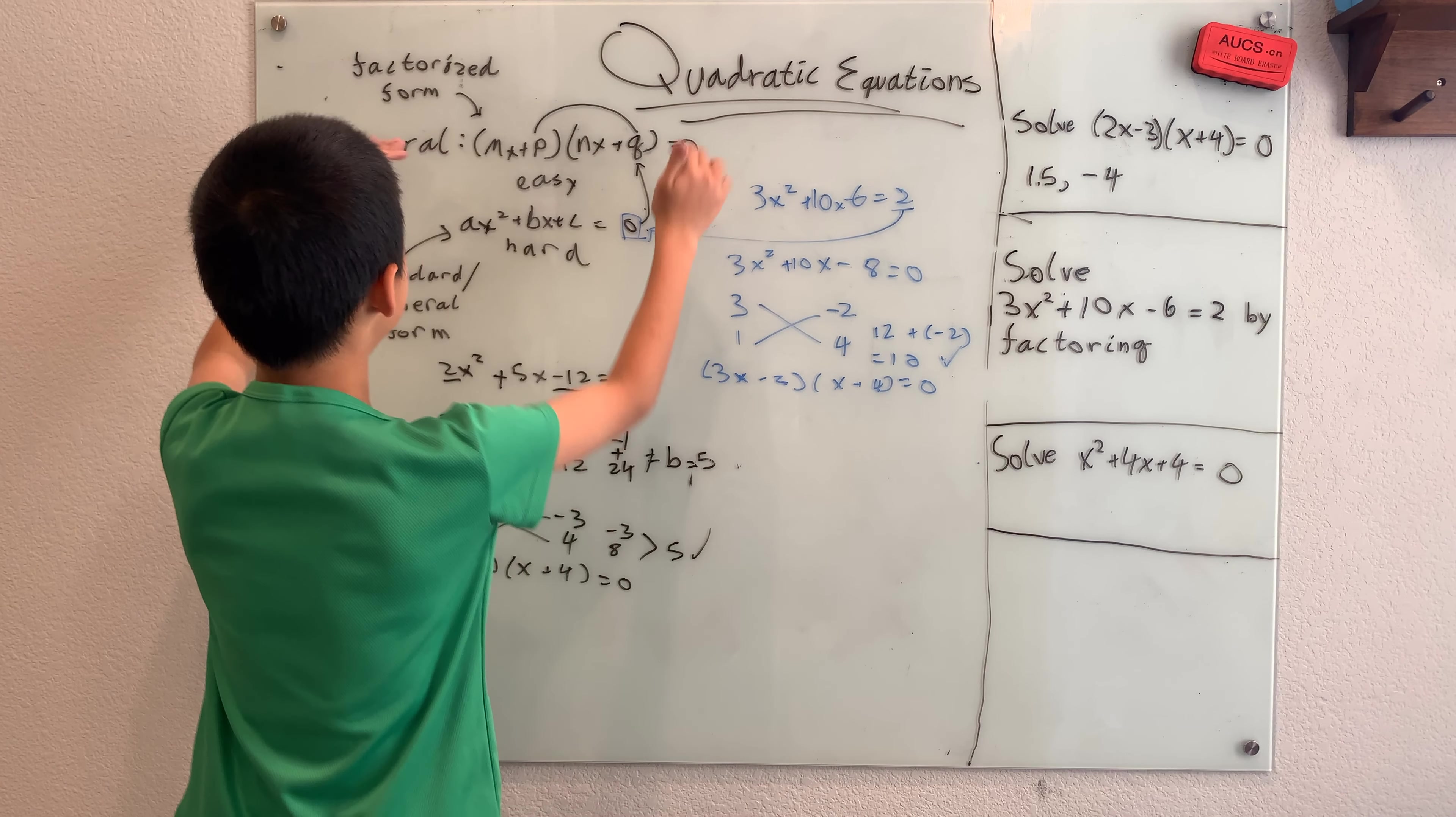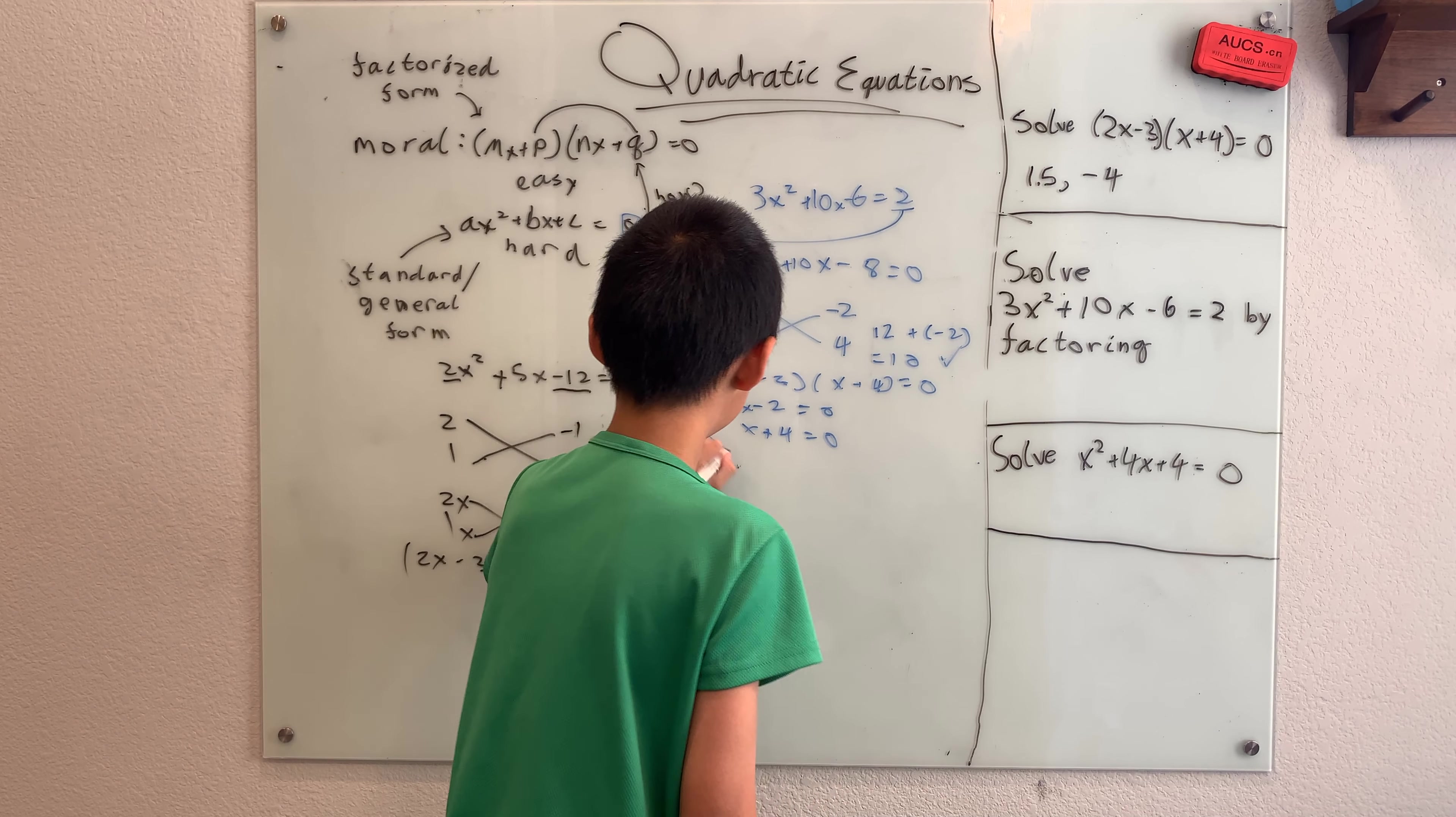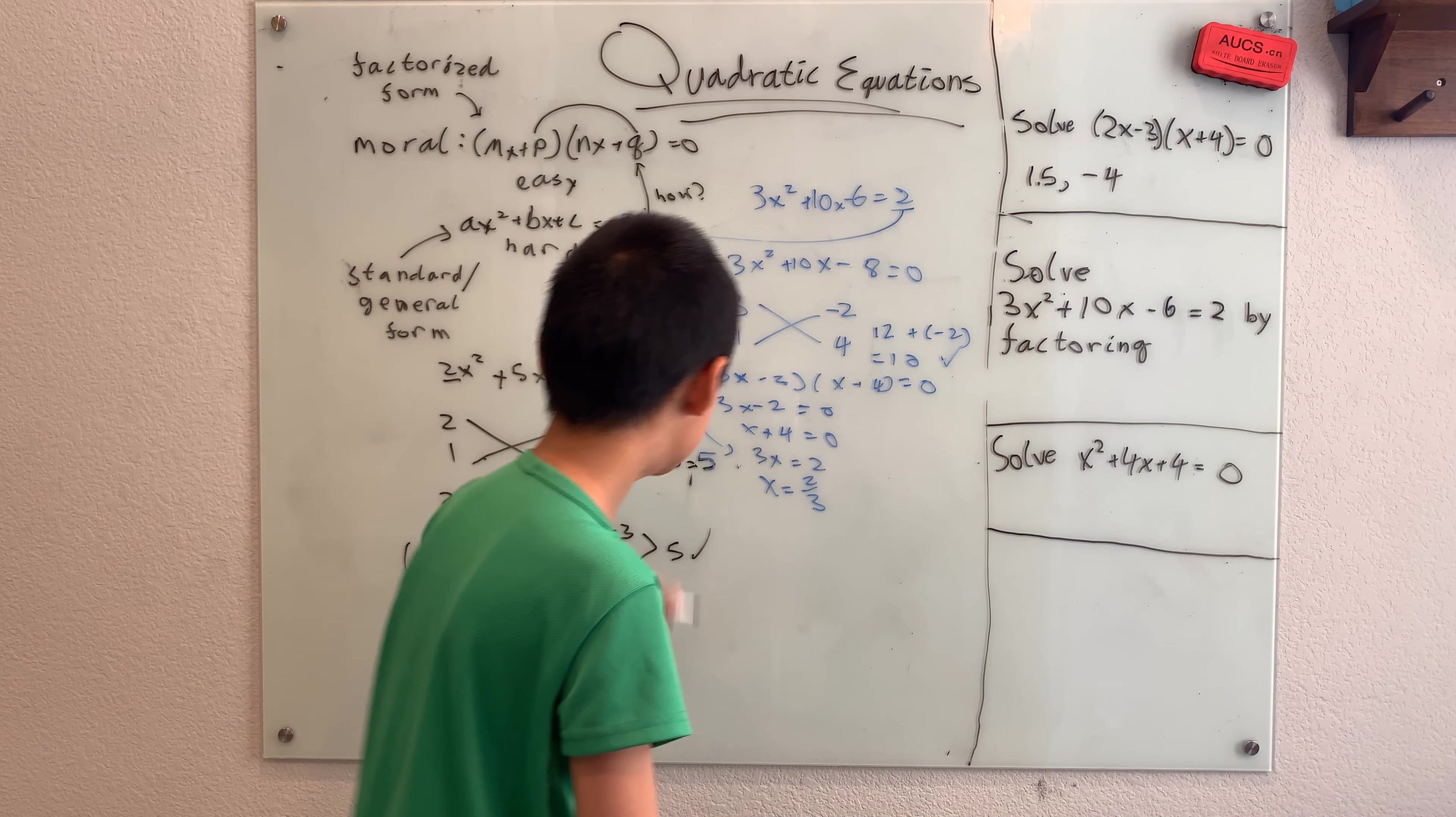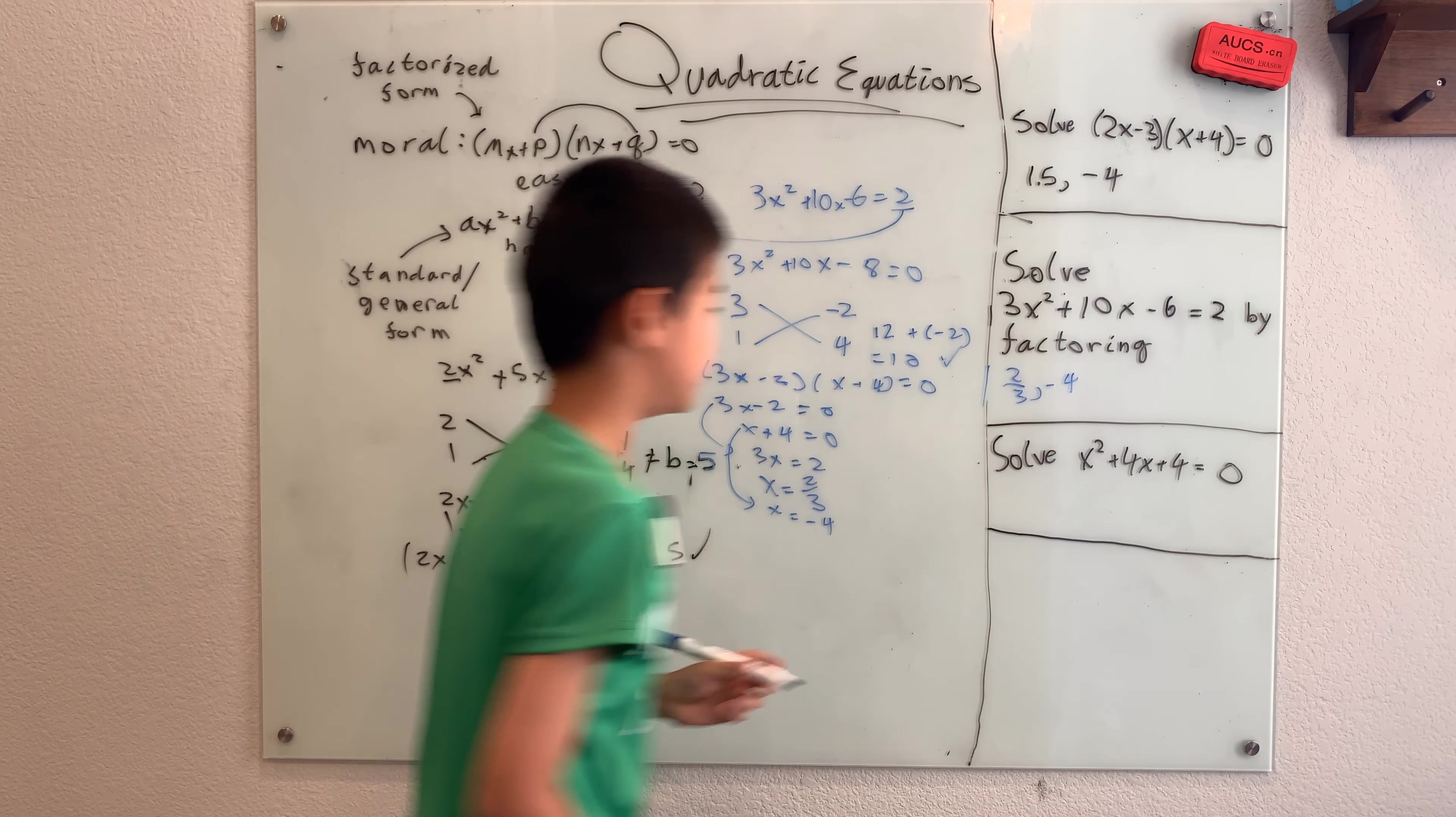It was very simple because we turned this hard form into this easy, easy form. So, now, the zero property tells us that either 3x minus 2 is equal to 0, or x plus 4 is equal to 0. So, this tells us that 3x equals 2, x is 2 thirds. I'm not going to write that as a decimal. That's scary. And this just tells us x is negative 4. So, either here, x is 2 thirds, or x is negative 4.